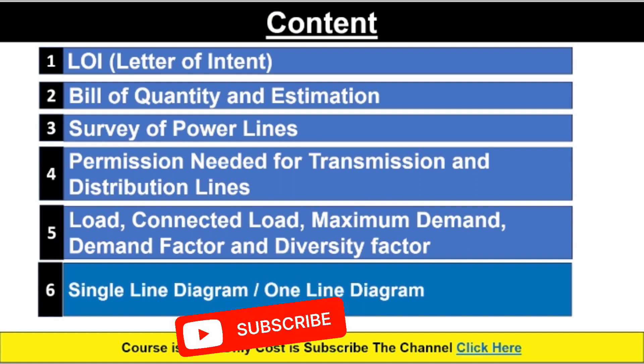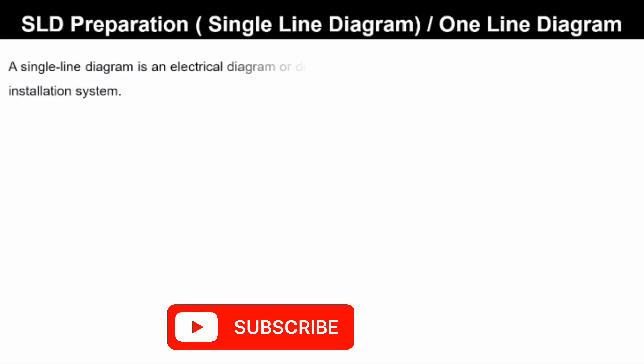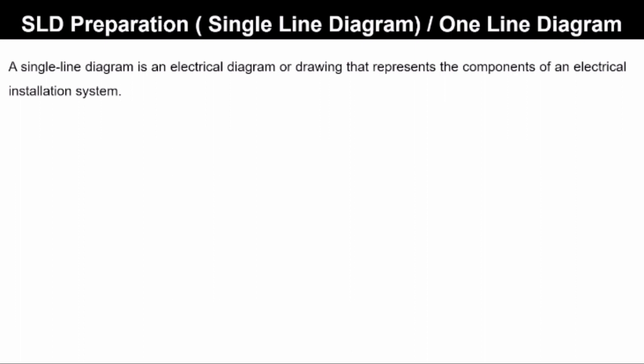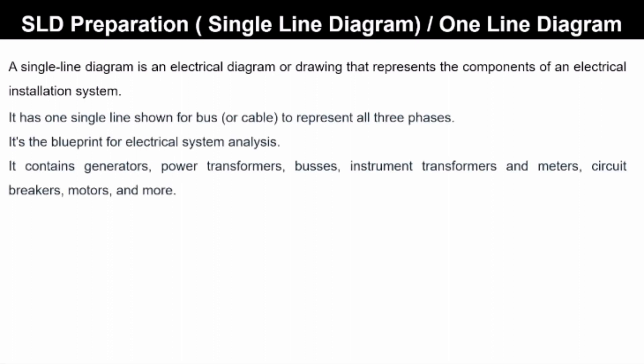A single line diagram is an electrical diagram or drawing that represents the components of an electrical installation system. It has one single line shown for bus or cable to represent all three phases.